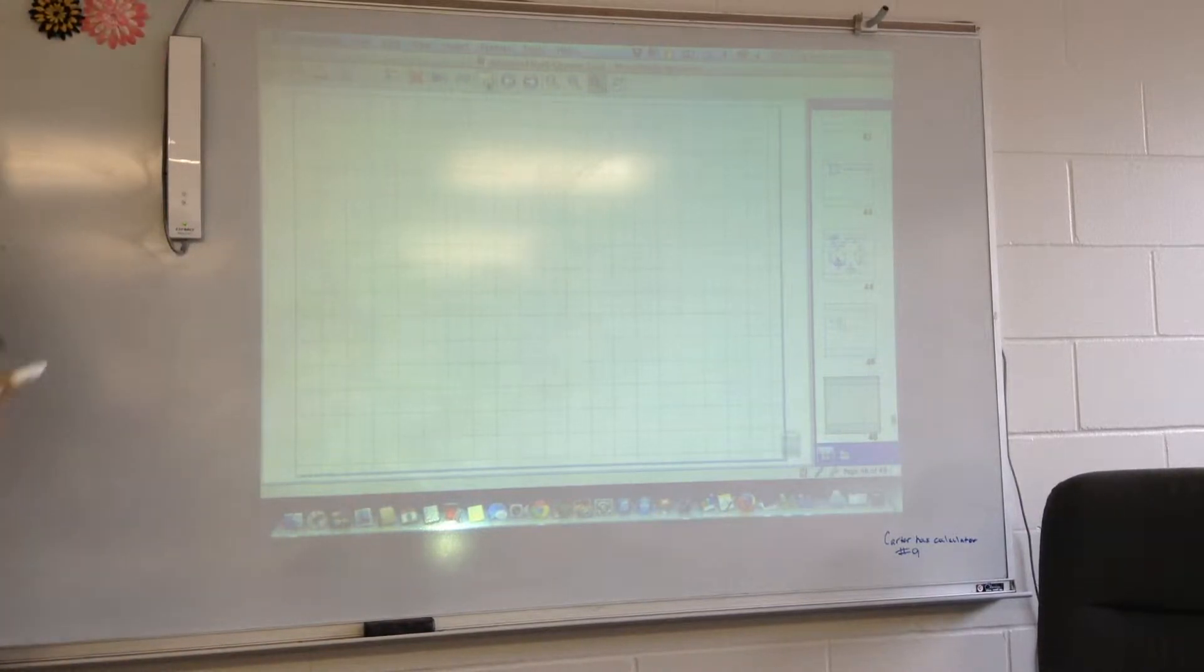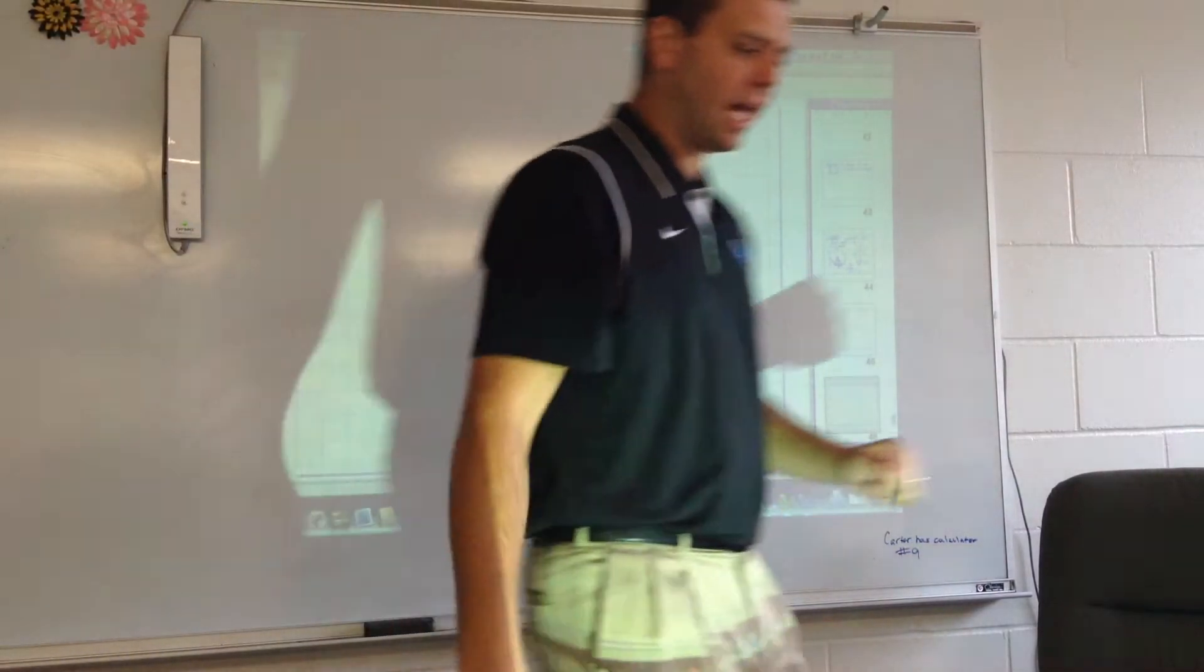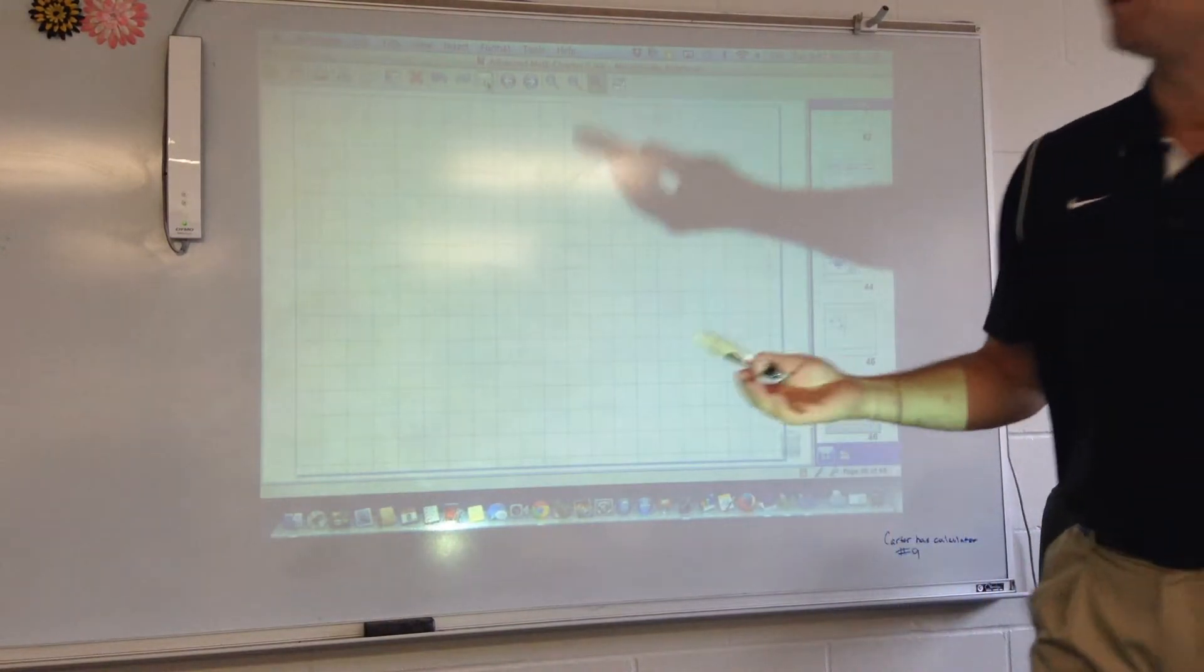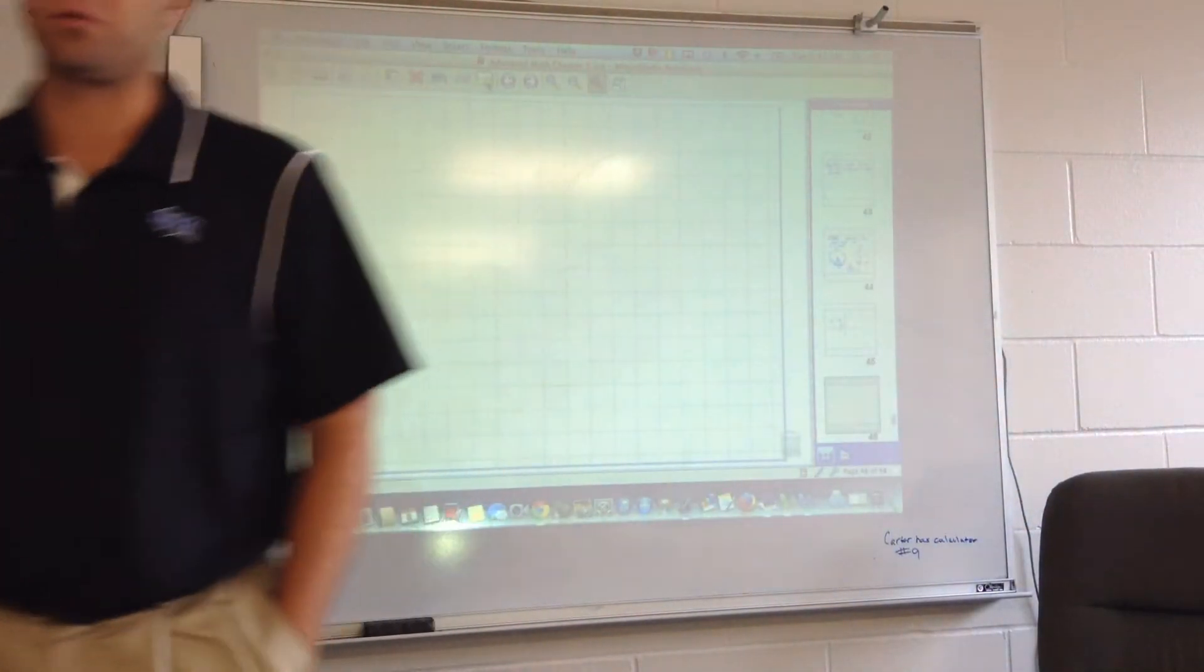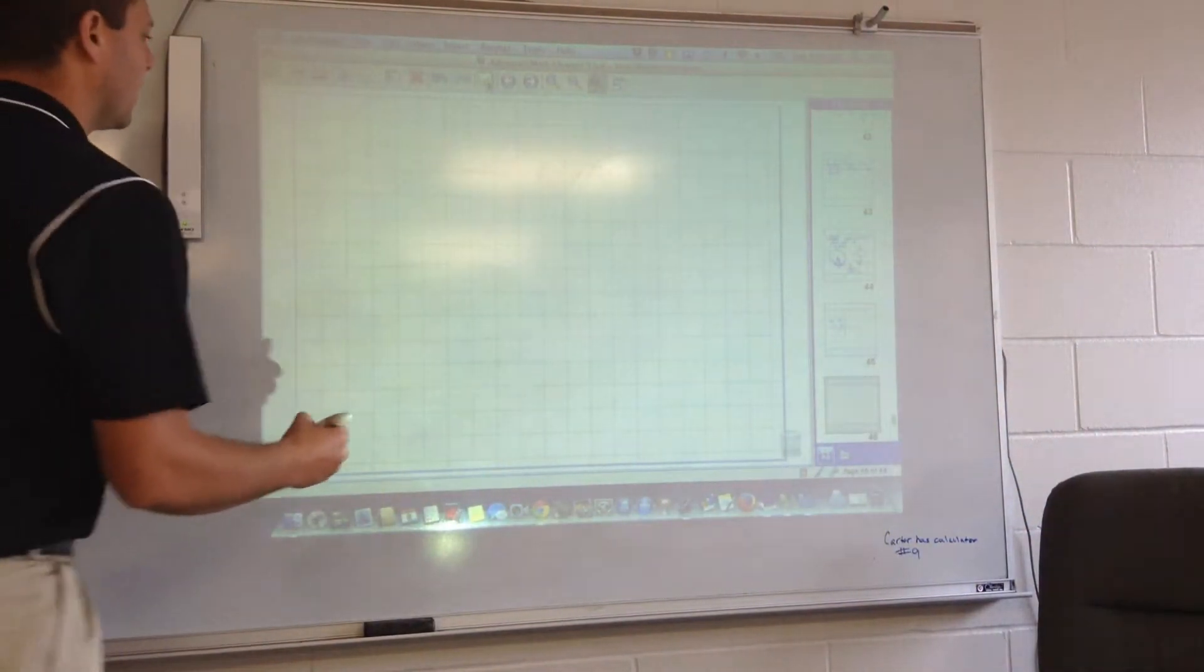All right, so learning target 5-3, we're finding missing sides of right triangles. This is a review from Geometry. I think this will ring a bell as soon as you see it.